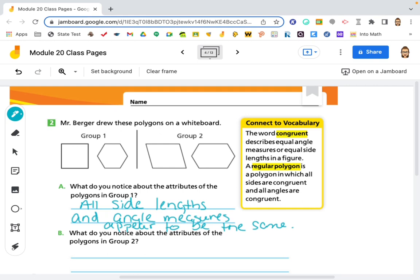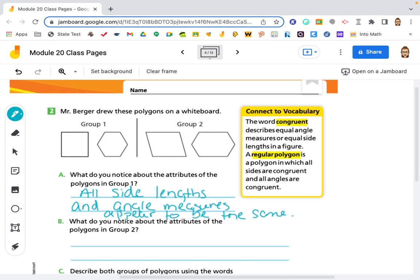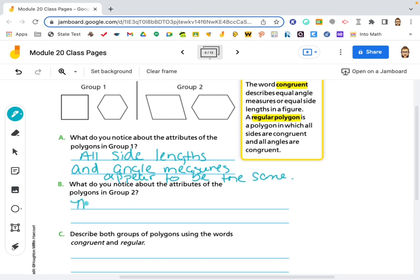So, what do you notice about the attributes of the polygons in group 2? Well, the side lengths and angle measures do not appear to be the same.